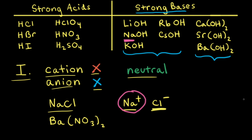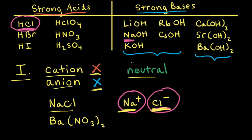Next, we think about the anion. To determine whether or not the anion will react with water, it's helpful to think about a list of common strong acids. If the anion is the conjugate base to one of the strong acids, the anion will not react with water. In our case, we have the chloride anion, which is the conjugate base to HCl. Since Cl minus is the conjugate base to HCl, Cl minus will not react with water. The stronger the acid, the weaker the conjugate base. Therefore, the chloride anion is of negligible basicity and will not react with water. Since neither the cation nor the anion react with water, an aqueous solution of sodium chloride will be neutral.